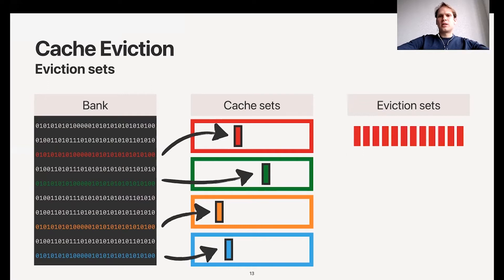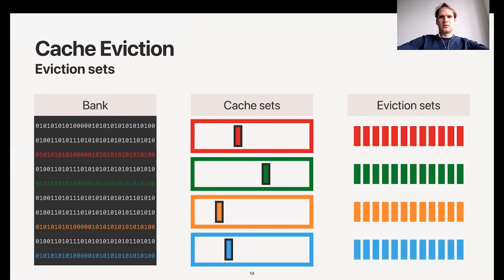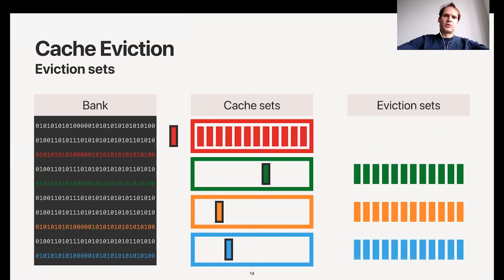You should find 12 addresses that would all map to this red set, and when you access all of them, they would evict the aggressor that's there. We access all of them, as a result our aggressor goes out. We then access our aggressor again, it's brought into the cache, it evicts one of the members of the eviction set, and then we need another eviction set to again evict our aggressor. This is slow because to access our aggressors we now need to access all these addresses in our eviction sets, and this takes a lot of time.